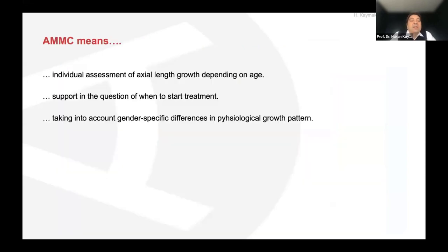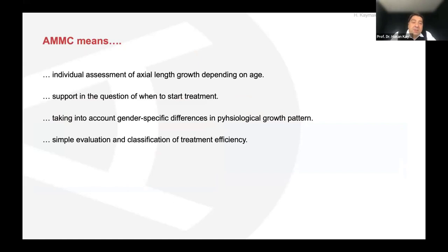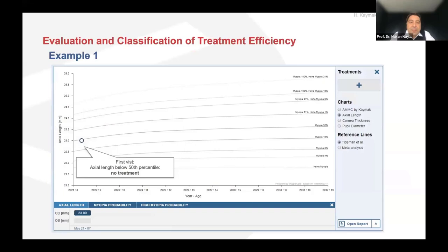AMMC also accounts for gender-specific differences in physiological growth pattern — boys and girls differ — and this is implemented in the AMMC system. It provides simple evaluation and classification of treatment efficacy: very easy and practical. You see the classification of treatment response — before and during therapy — and can classify it as good response, no response, or low response, and communicate with parents about treatment effect.